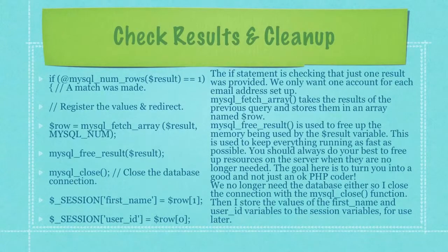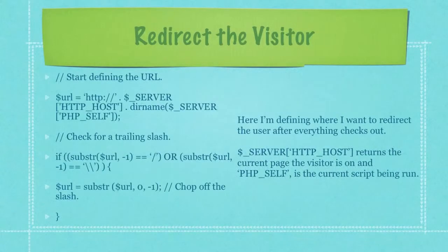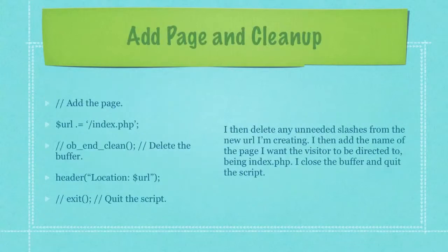We no longer need the database either so close the connection with the MySQL Close function. Then I store the values of the first name and user ID variables to the session variables for use later. Here I'm defining where I want to redirect the user after everything checks out. When I use the key HTTP host in the array server it will return the current page the visitor is on and PHP self is the current script being run. I then delete any unneeded slashes from the new URL I'm creating. I then add the name of the page I want the visitor to be directed to being index.php and then I close the buffer and quit the script.